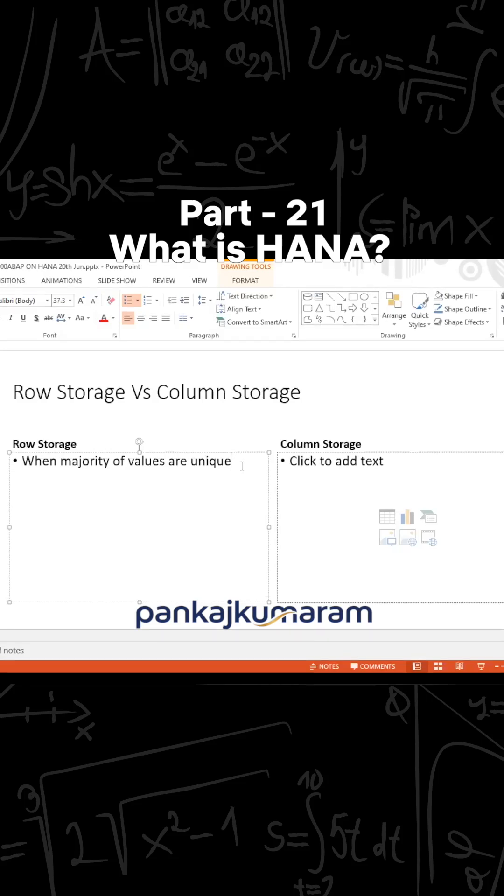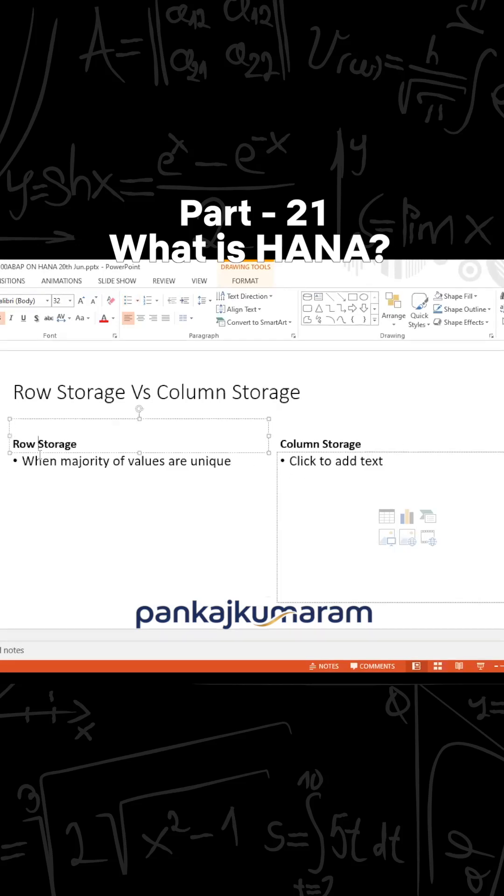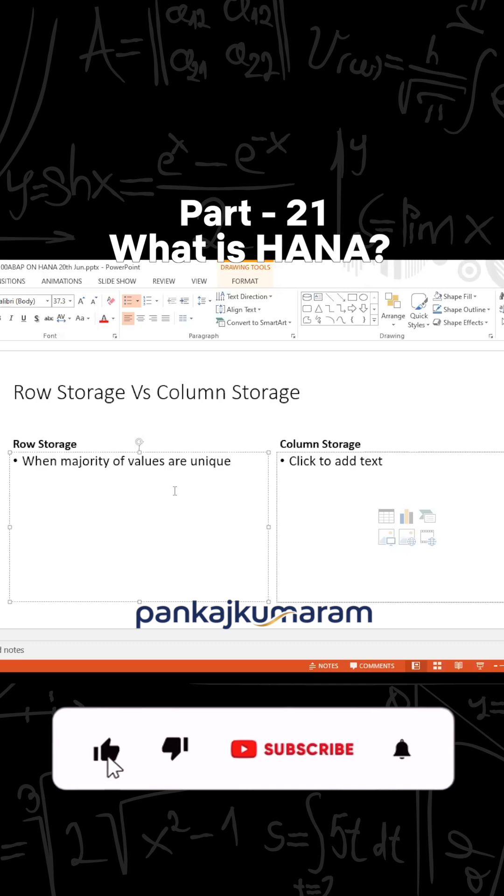...if you don't have the duplicate records, when you have the unique records, you are not going to take the advantage of column storage. Then why should you go for column storage? You are supposed to choose the row storage. So the first point: when majority of values are unique, then you can go for row storage. On the...